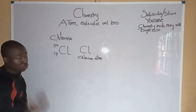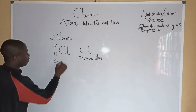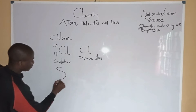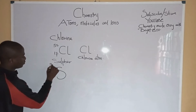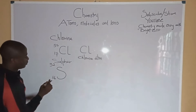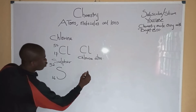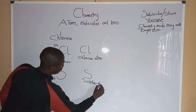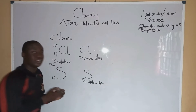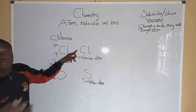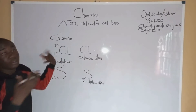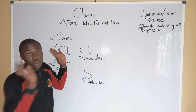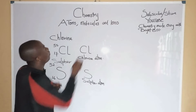If we take another example like sulfur — sulfur is an element, and this is the sulfur atom. It is not pronounced sulfur molecule or chlorine molecule. It is pronounced chlorine atom or sulfur atom when it is a single atom.